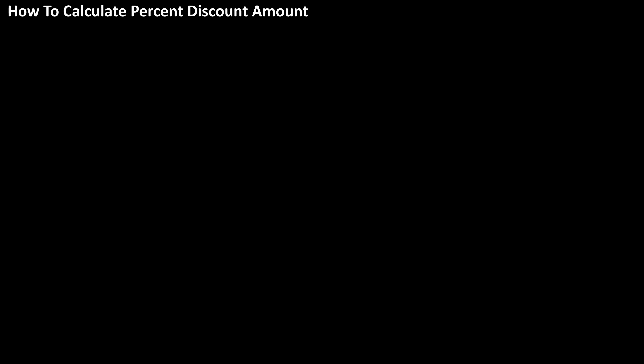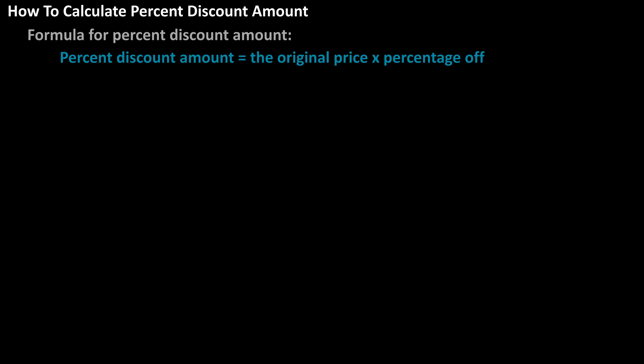The formula to calculate the percent discount amount is: percent discount amount equals the original price times the percentage off.